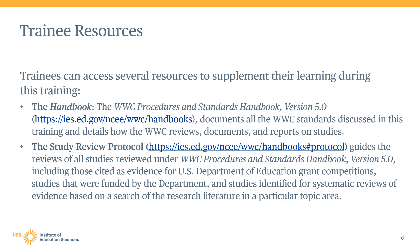There are several resources available to supplement your learning during this training series. The WWC procedures and standards handbook is a key resource. The handbook documents all the procedures and standards discussed in this training and includes information about how the WWC reviews documents and reports on studies. Throughout the training, we will direct you to the handbook to learn more about a particular topic. You should also consult the study review protocol to learn more about the scope and parameters of study reviews. The study review protocol guides the reviews of all studies under the WWC procedures and standards handbook version 5.0, including those cited as evidence for U.S. Department of Education grant competitions.